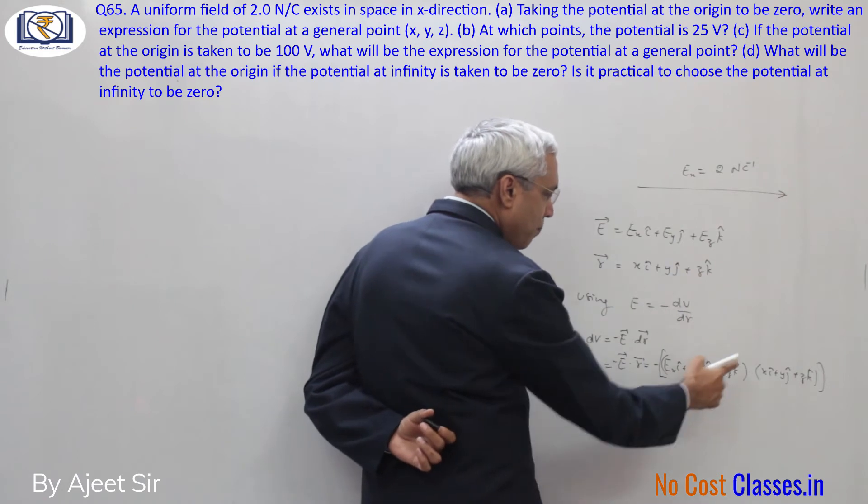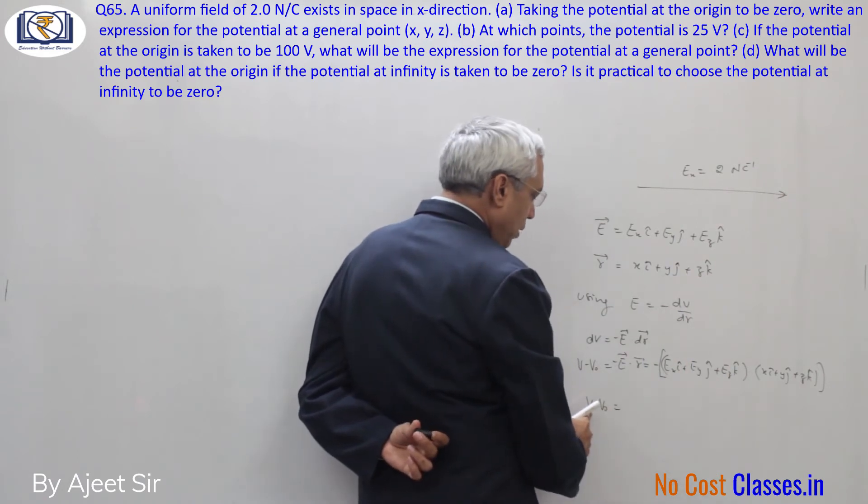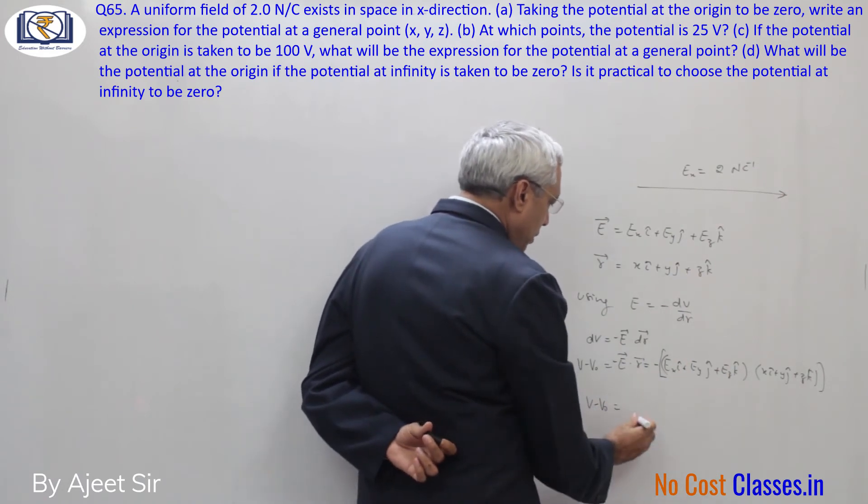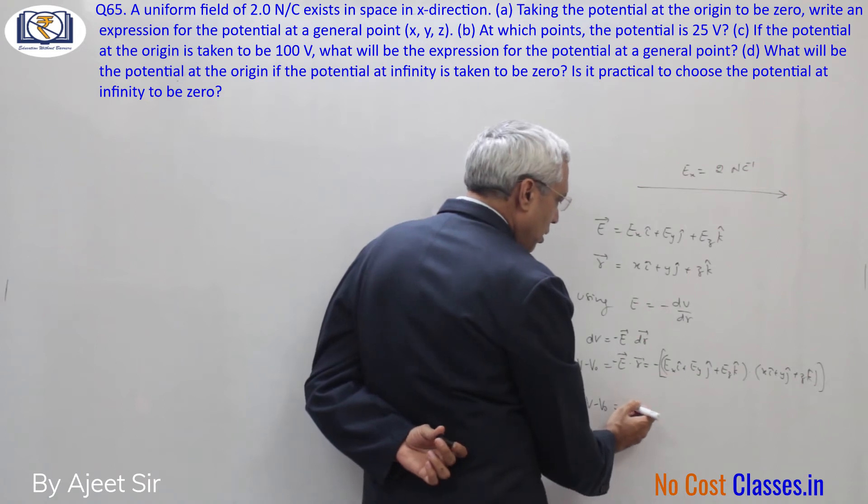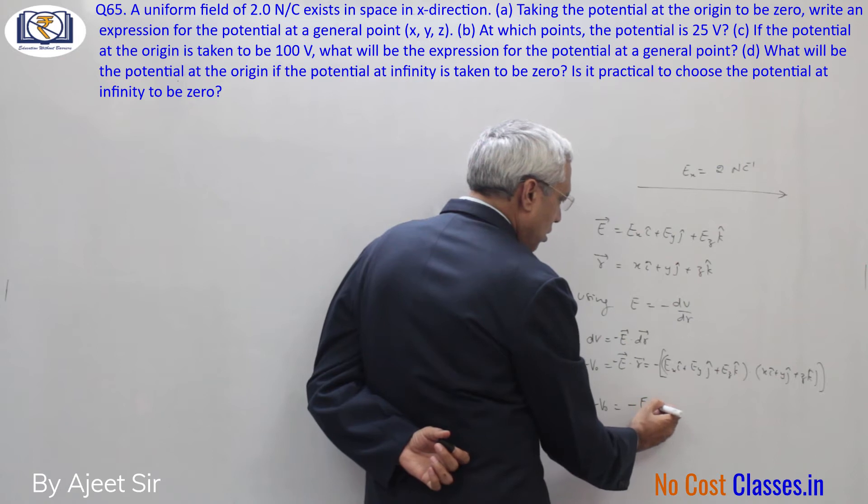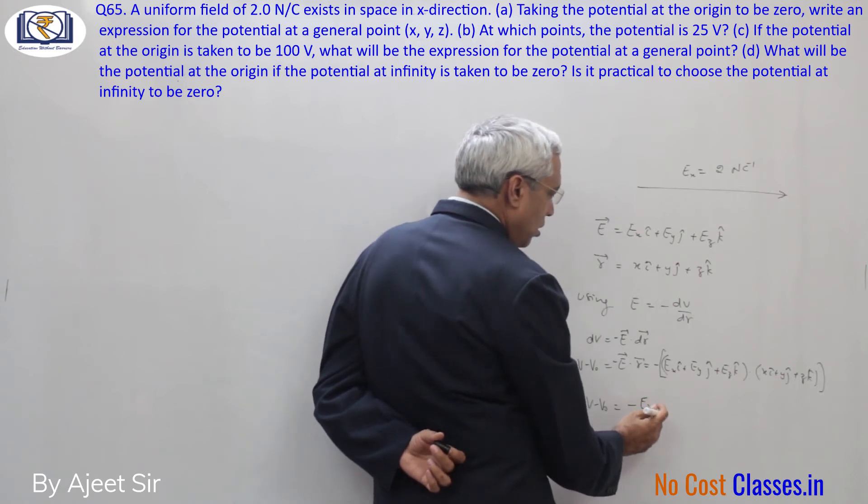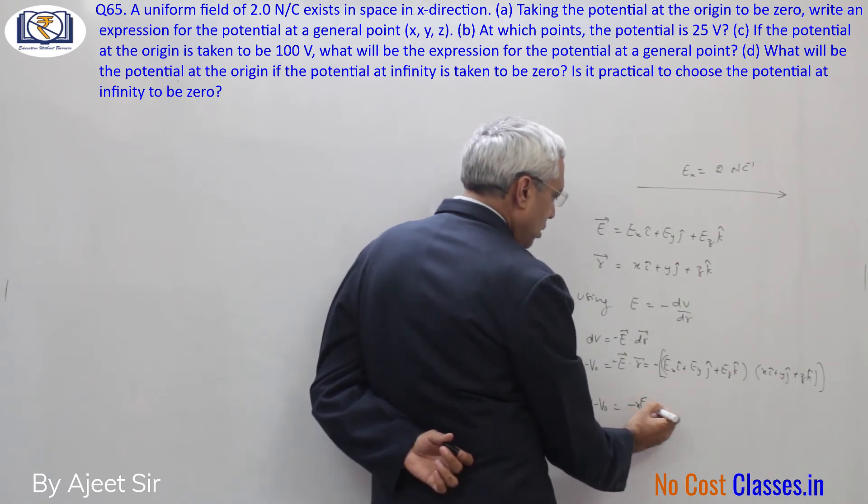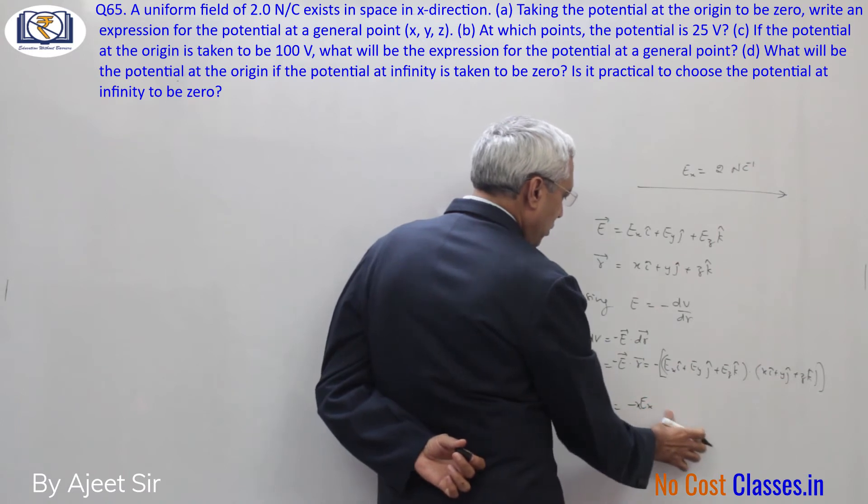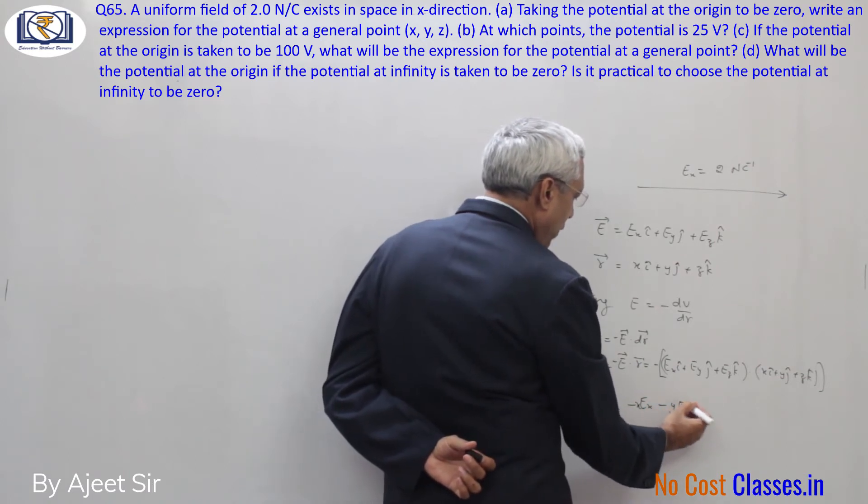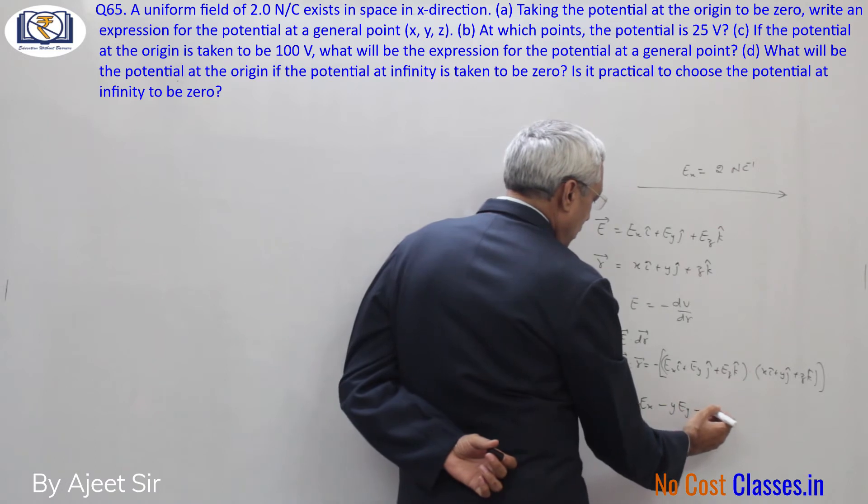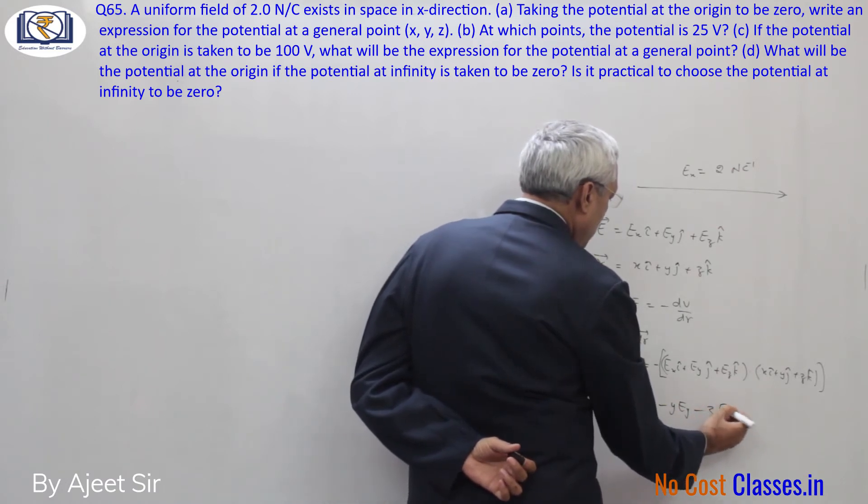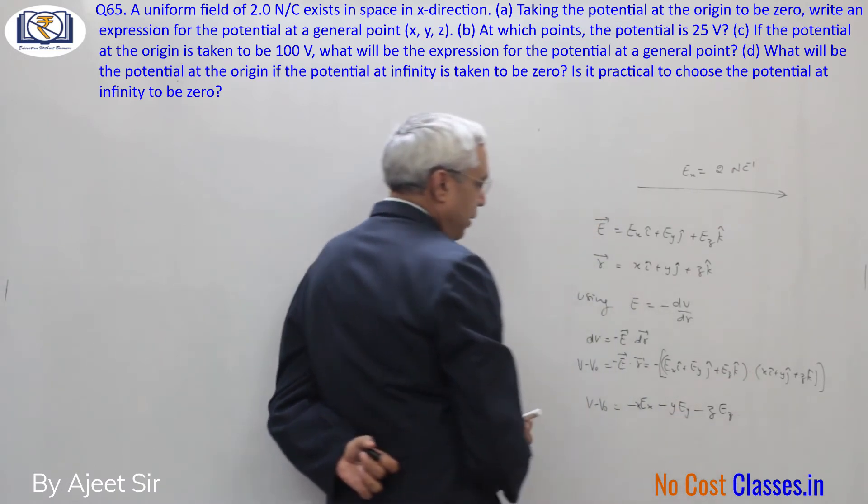V minus V naught, where V naught is the potential at origin and V at a general point x, y, z, equals minus Ex x minus Ey y minus Ez z for the components.